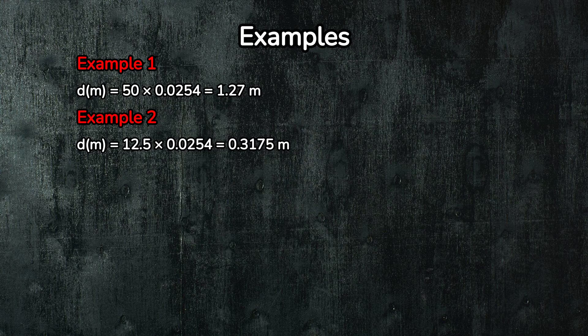So, if we multiply 50 inches by 0.0254, we get... And there you have it. Your 50-inch piece of wood is 1.27 meters long. Easy, right?